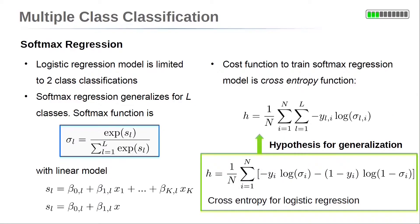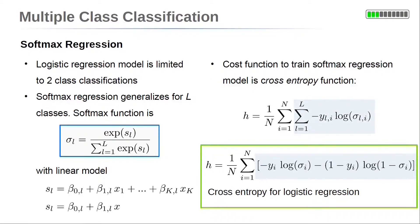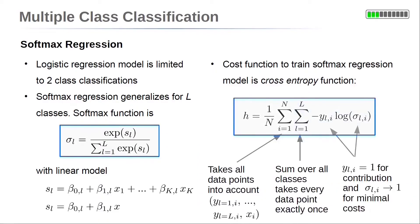The softmax function is fitted to data by using a generalization of the cost function of logistic regression. This generalized version of the cross-entropy includes the sum over all classes instead of the two explicit contributions. So here we have 1/N times the sum over all data points by i and the sum over all classes by l of -y_li × log(σ_li).